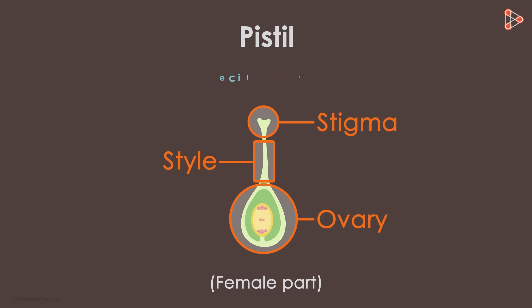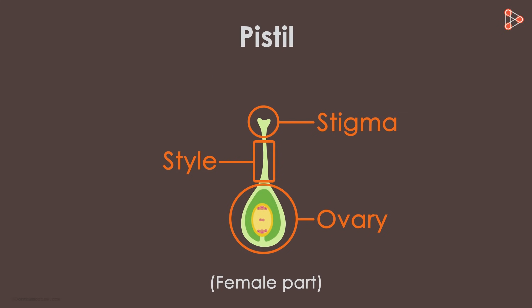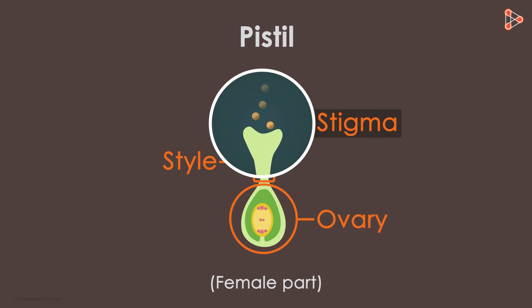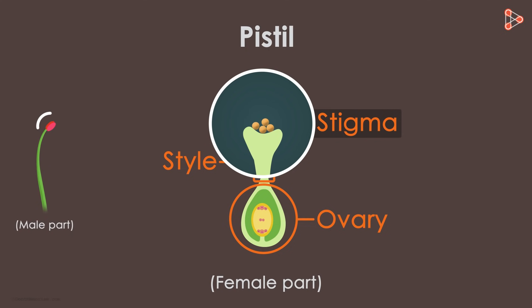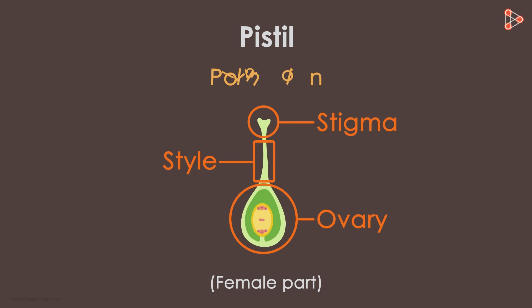Do these structures have specific functions? Yes, they do. The part called the stigma is the landing place for the pollen. Pollen from the male part — the anther — lands on the stigma and germinates further. This process is what we call pollination in plants.